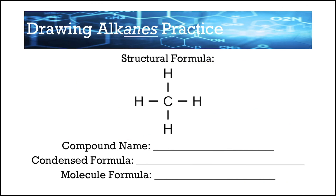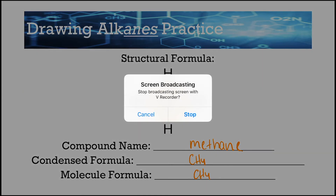Lastly, given the structural formula with one carbon: Table P tells us one carbon is 'meth-,' and with only single bonds it ends in '-ane' — so that's methane. The condensed formula is CH₄ because you can't break it up any further, and that's also the molecular formula. That's it for today. Tomorrow we'll go into naming and drawing many more compounds. That concludes our intro to organic chemistry — have a wonderful day!